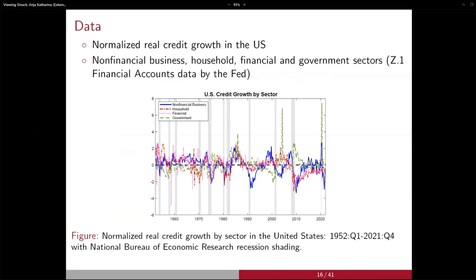In the non-linear credit cycle application, we take US financial data — specifically credit growth from different sectors in the US economy. This picture plots the dynamics of these different credit growth variables, and you can see it's typically around the crises — COVID, the Great Recession, and previous recessions — where we see these reversals in credit growth with high non-linearities.